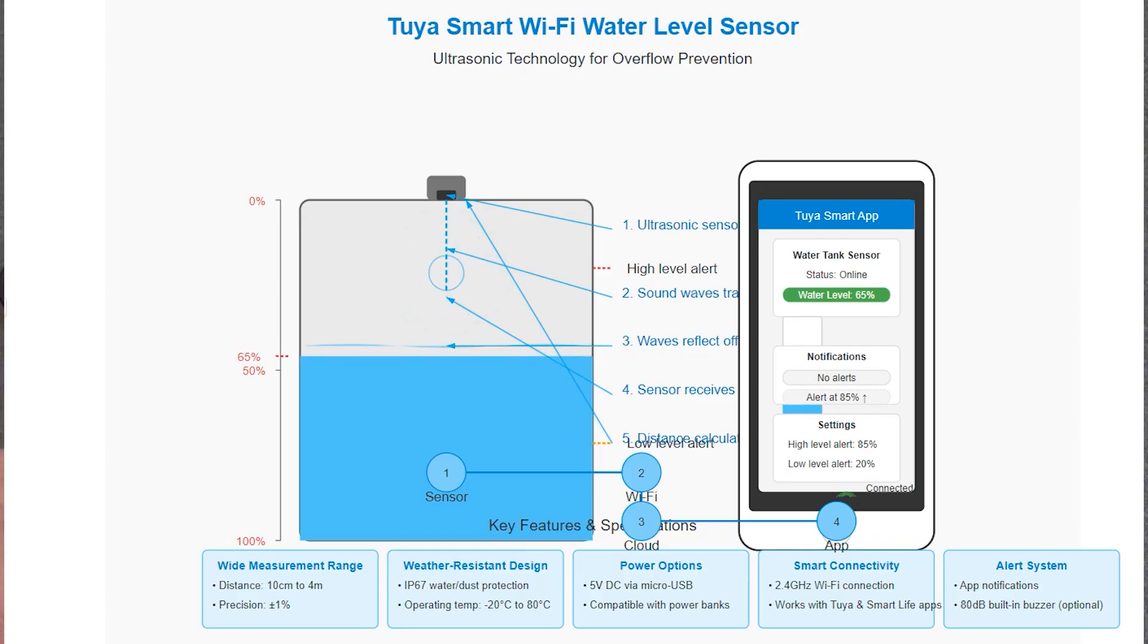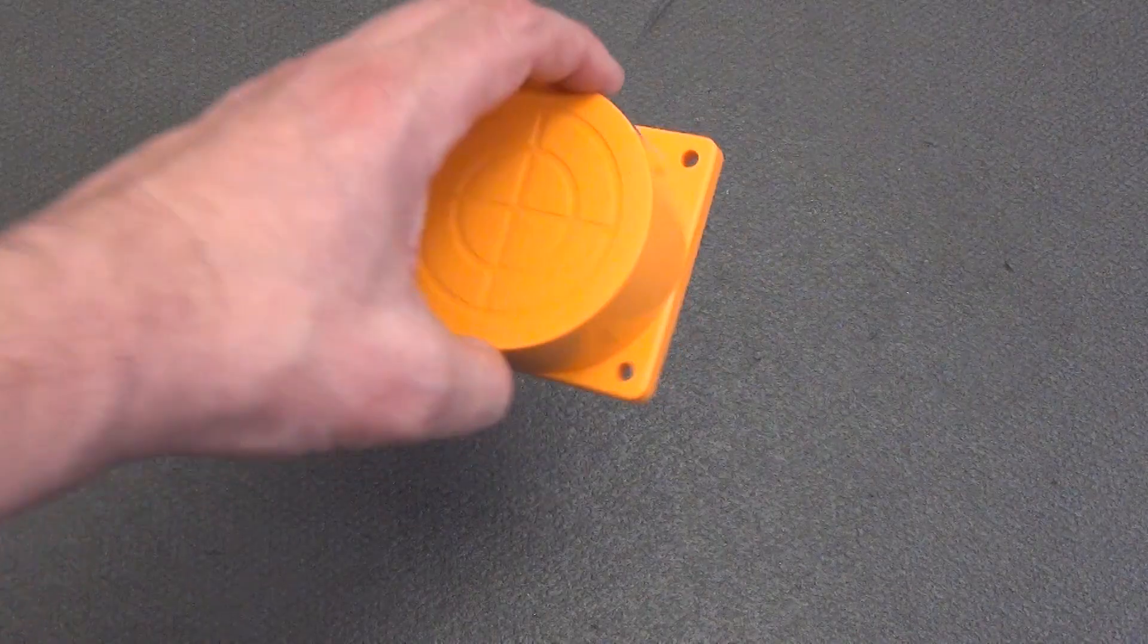After measuring, the data is sent via Wi-Fi to the Tuya or Smart Life application, where you can immediately see the level, set notifications, trigger thresholds, enable an alert at a low level and much more. This approach allows you to control the level of water, fuel or other liquids remotely and without having to open the tank cap every time.